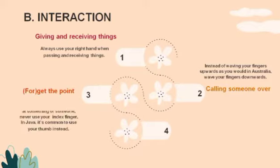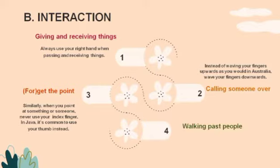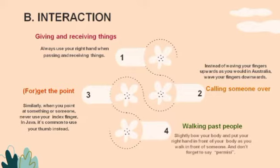Similarly, when pointing at something or someone, never use your index finger. In Java, it is common to use your thumb instead. When walking past people, slightly bow your body and put your right hand in front of you as you walk in front of someone, and don't forget to say 'permisi.'